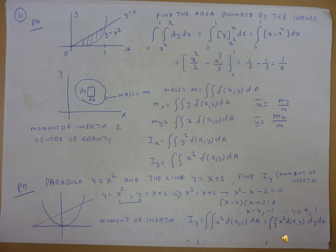The next formulas are for moments. We write the double integral: Mx equals double integration of y times f(x,y) dA. My equals double integration of x times f(x,y) dA. So x-bar equals My over M and y-bar equals Mx over M. The moment of inertia can also be calculated: Ix equals double integration of y squared times f(x,y) dA, and Iy equals double integration of x squared times f(x,y) dA.